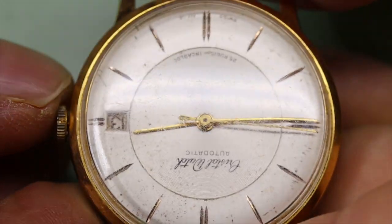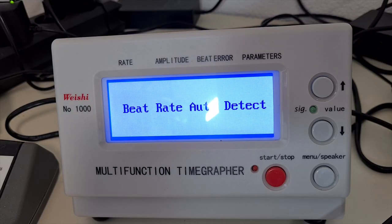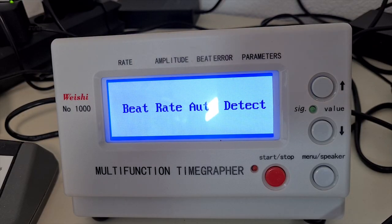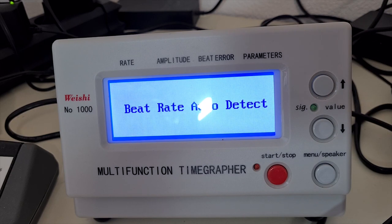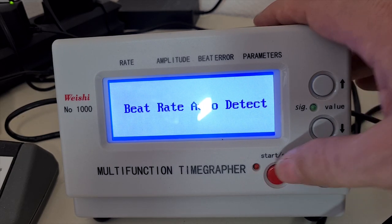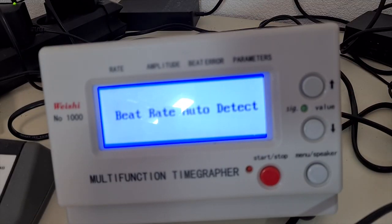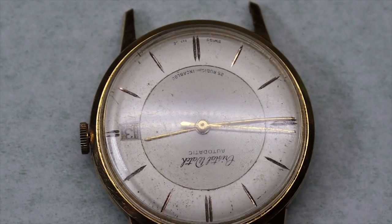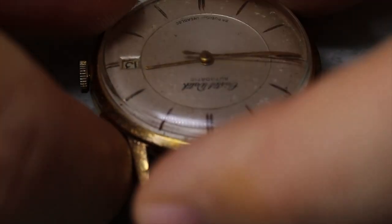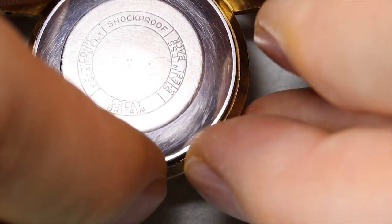First thing we always want to do is have a look at the time graph, so let's do that. Oh, there was a signal, so the watch is not running. We cannot move the hands. Doesn't look too good.